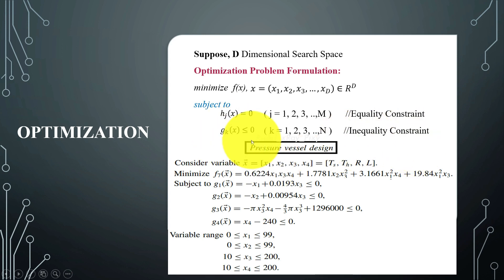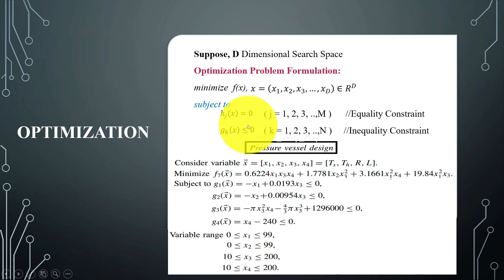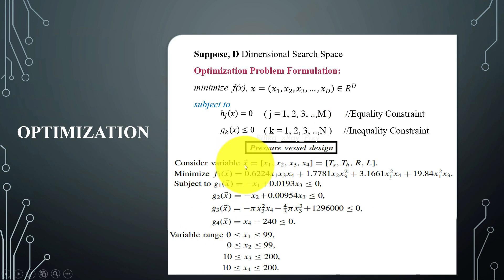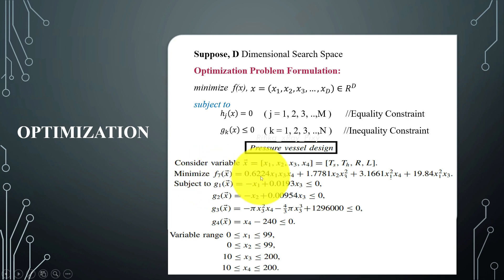Here you can see the equality constraint indicated by an equal sign, and the inequality constraint indicated by an inequality sign. For example, we have an engineering design optimization problem with different variables, where f(x) is the objective function.